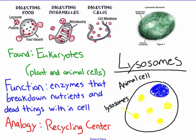Lysosomes are usually forgotten about, but they have a very important role. They're found in eukaryotic cells. Things are constantly dying and nutrients are constantly coming in within a cell. When organelles die, you need something to break that dead stuff down. Lysosomes are enzymes that break down nutrients and dead things within the cell so we can reuse them. My analogy here is a recycling center — lysosomes break things down and allow the cell to reuse them.